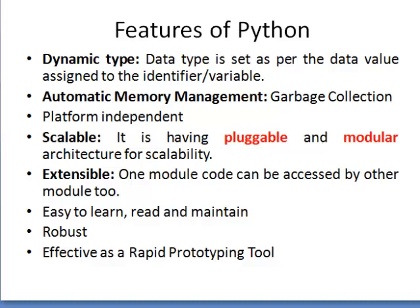Now the basic features of Python: first, Python has the concept of dynamic typing, meaning the data type is set as per the data value assigned to the variable. Second, automatic memory management — it supports garbage collection, so Python objects that are no longer required will automatically release memory, which is considered garbage collection and is helpful for later use.